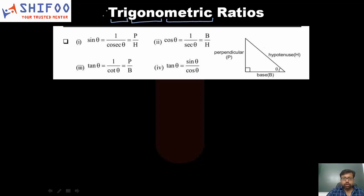When we study trigonometry, there are six trigonometric ratios that we are principally concerned with, and they are sin theta, cos theta, tan theta, cosec theta, sec theta, and cot theta.